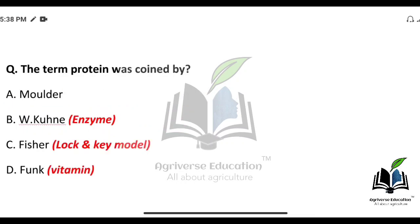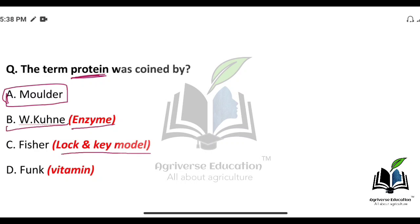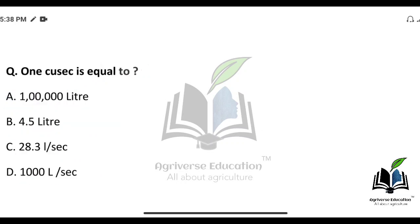The term 'protein' was coined by whom? The right answer is option A — Mulder. The term 'enzyme' was given by W. Kühne; the Lock and Key model was given by Fischer; and the term 'vitamin' was given by Funk.